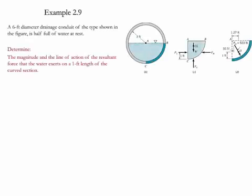Example 2.9. In this example we have a 6 feet diameter drainage conduit which is shown in the picture. This drainage is only half full with water at rest. We need to determine the magnitude and the line of action of the resultant force that the water exerts on a one foot length of the curve section.